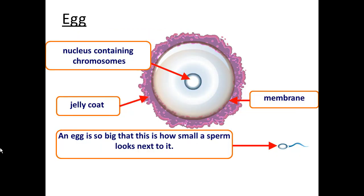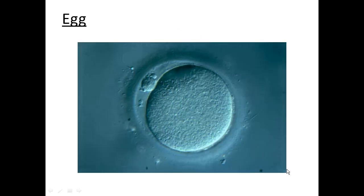This is how an egg cell looks: you have the nucleus in the middle with the 23 chromosomes inside, then you have the jelly coat to protect the egg cell. As you can see from this picture, an egg cell is so big that a sperm looks very small next to it. The egg cell is much bigger than the sperm cell. Through a microscope, you can see the nucleus containing the 23 chromosomes.